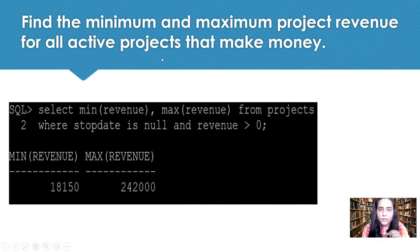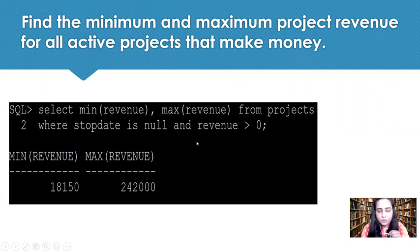Active projects are projects that have a stop date of null, meaning they haven't finished yet. So we add WHERE stop_date IS NULL, and it also says they should be making money, which means the revenue should be greater than zero. When you do that, this is the result you get.